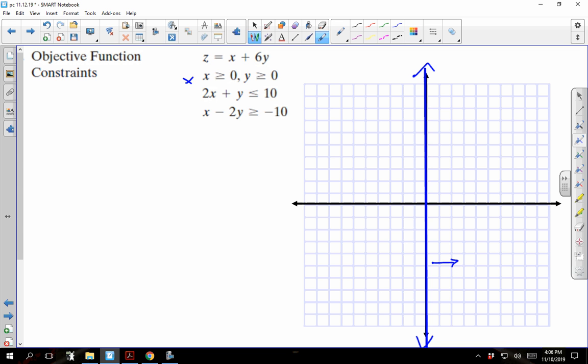We don't want to shade yet. We'll wait until we see what the enclosed figure looks like. Next one is y is greater than or equal to zero. That's going to be right here where all the y values are zero. That's above this here.